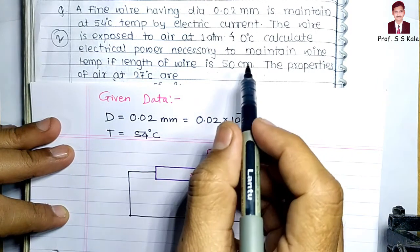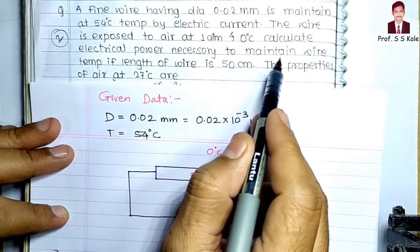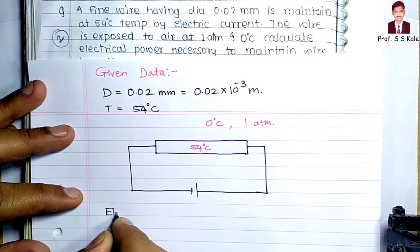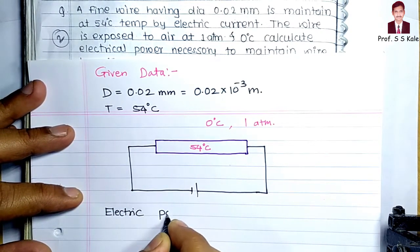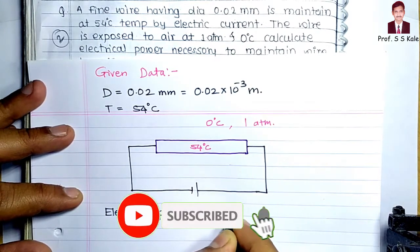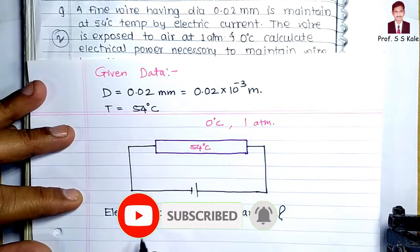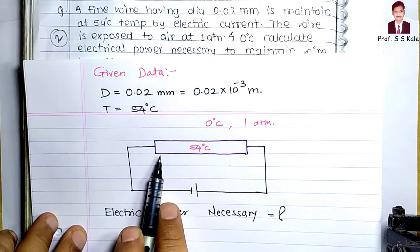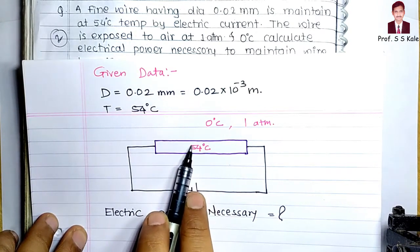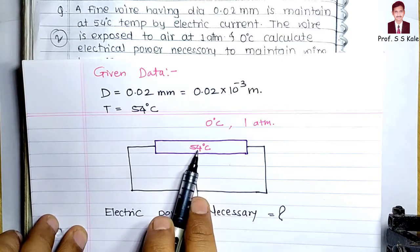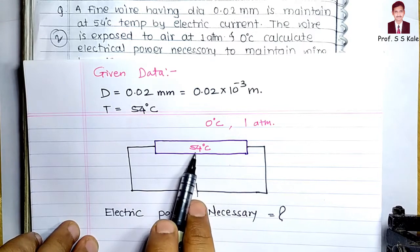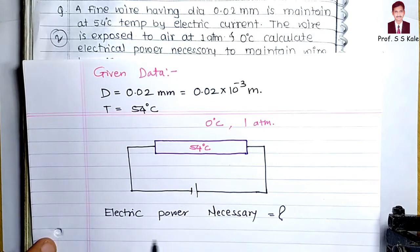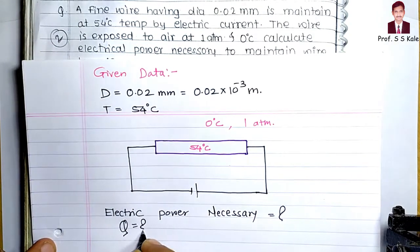We have to determine the electric power necessary to maintain the wire. You have to remember that whatever electricity we supply ultimately gets converted into heat — because of electrical resistance, electricity converts to heat, which maintains the wire at 54°C. So electric power necessary means I have to determine the heat transfer required.